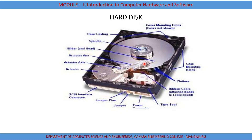The read-write head does not actually touch the disk. Instead, it just barely skims above the surface, supported by a cushion of moving air generated by the spinning of the disk. The central motor keeps the disk rotating at around 7200 RPM, so the air provides a cushion allowing the heads to skim the surface and data to be written.